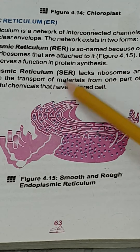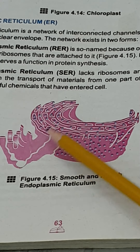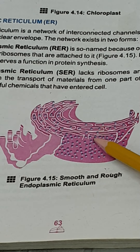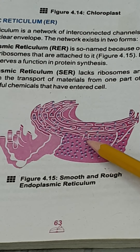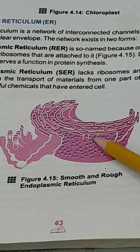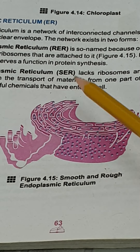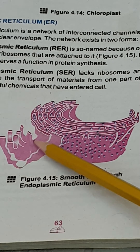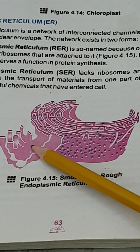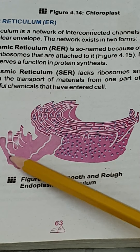Since the structure of these two forms is different, their functions are also different. Rough endoplasmic reticulum is attached with ribosomes and is involved in protein synthesis — the formation of proteins along with the ribosome. Smooth endoplasmic reticulum is responsible for the transport of material from the nuclear membrane towards the plasma membrane.